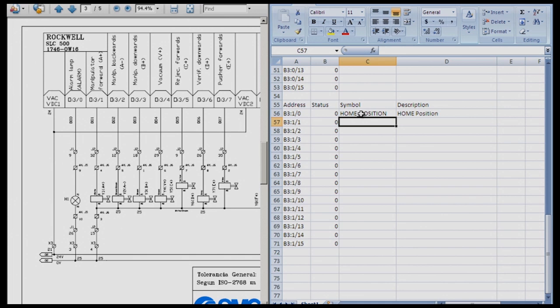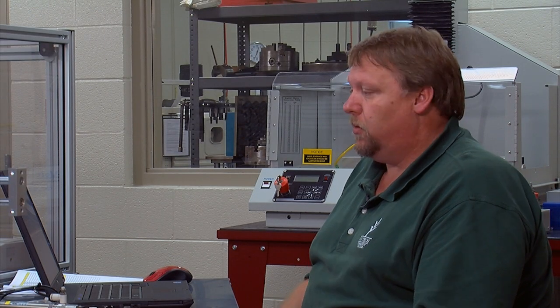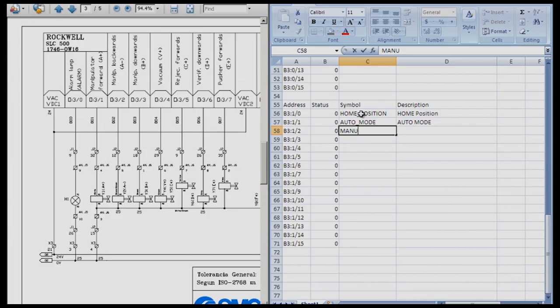So what else do we need this station to do? Well, we know we need auto mode. So let's program a bit as auto mode. We're going to type auto mode, and over here we'll do the same thing. We'll call it auto mode as the description. Well, if you've got auto mode, then you may need manual mode as well. So we're going to put our symbol in as manual underscore mode. And then the description is going to be manual mode. So we've got home position, auto mode, manual mode.